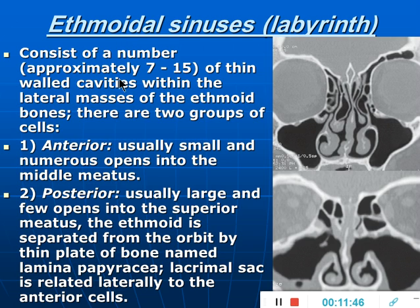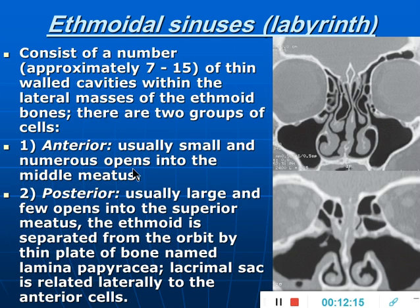The ethmoid sinuses are composed of multiple cavities — approximately 7 to 15 thin-walled cavities within the lateral masses of the ethmoid bones — divided into two groups: anterior and posterior. The anterior cells are small and numerous, while the posterior are large, pyramidal, and fewer in number. The anterior ethmoid air cells drain into the middle meatus, while the posterior ethmoid air cells drain into the superior meatus. The ethmoid is separated from the orbit by a thin-walled bone called the lamina papyracea, and the lacrimal sac is related laterally to the anterior ethmoid cells.